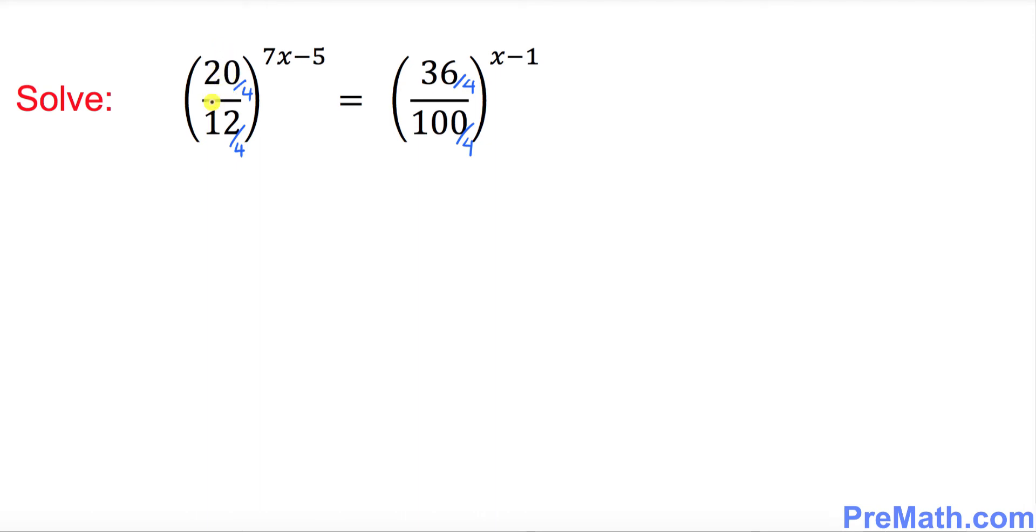So these fractions become 5 over 3 to the power 7x minus 5, equals - when you divide 36 by 4 you get 9, and 100 divided by 4 is 25 - so 9 over 25 to the power x minus 1.